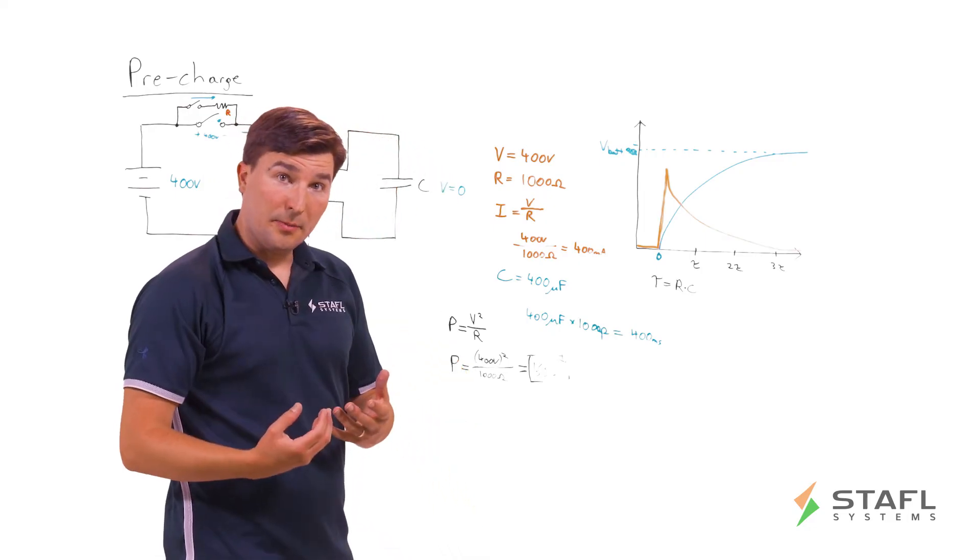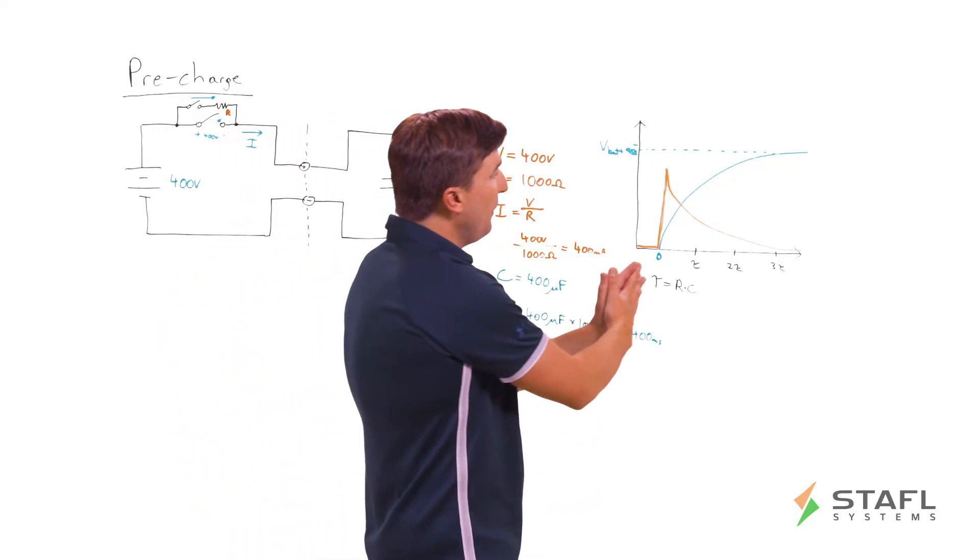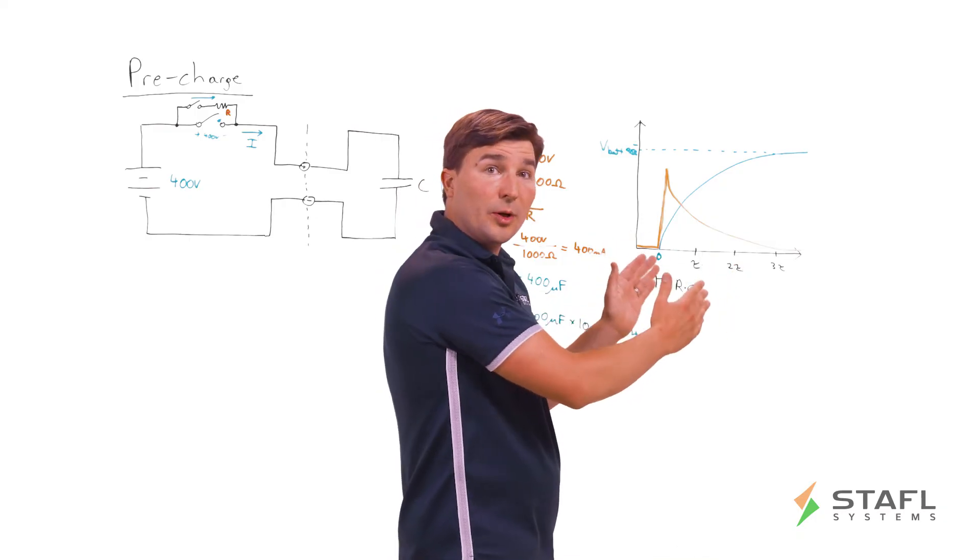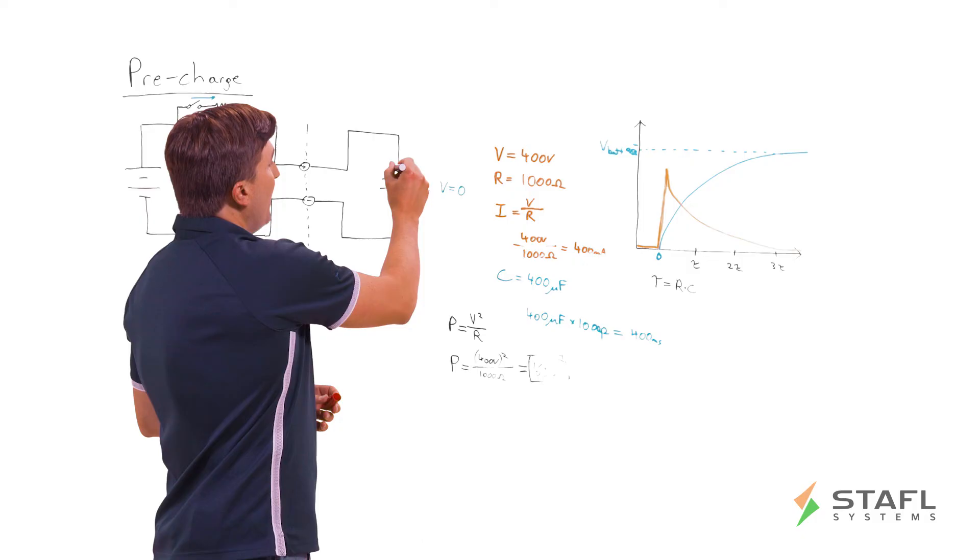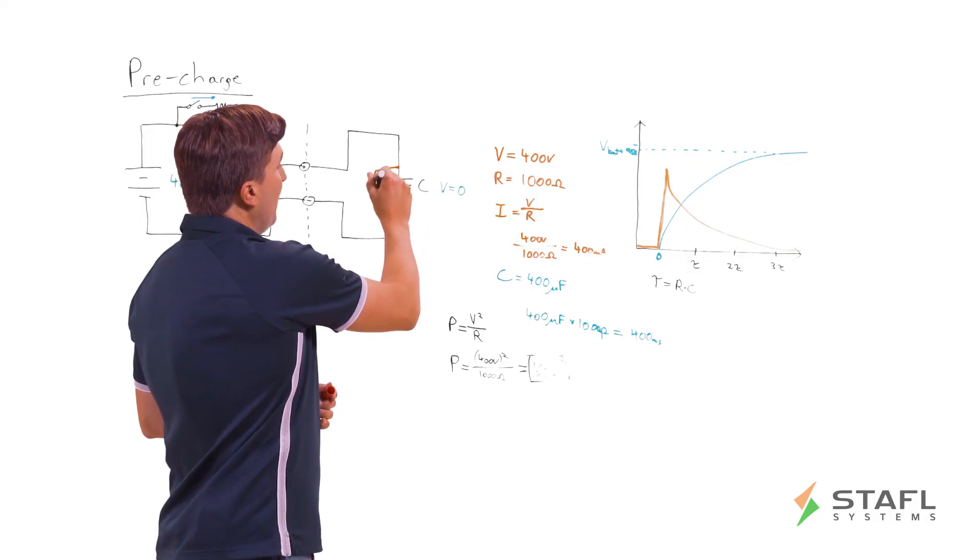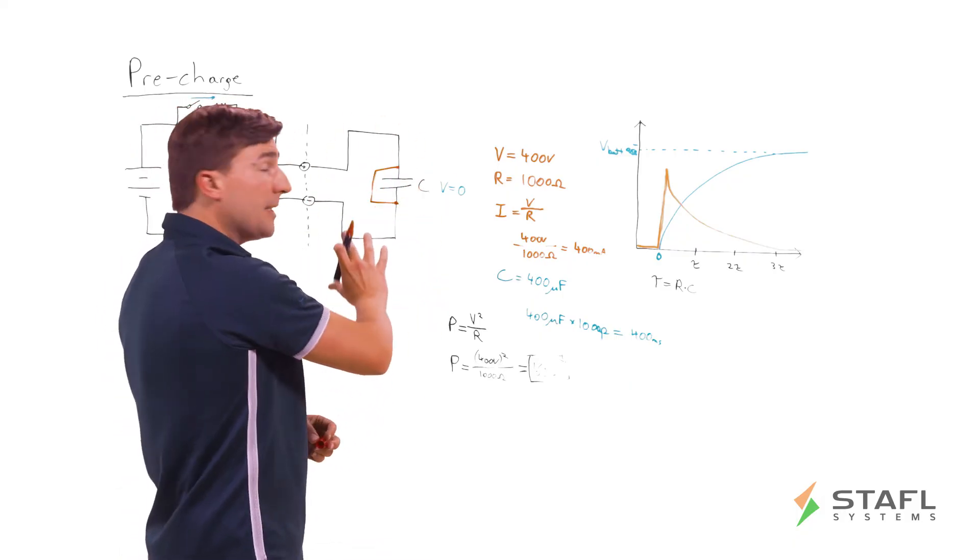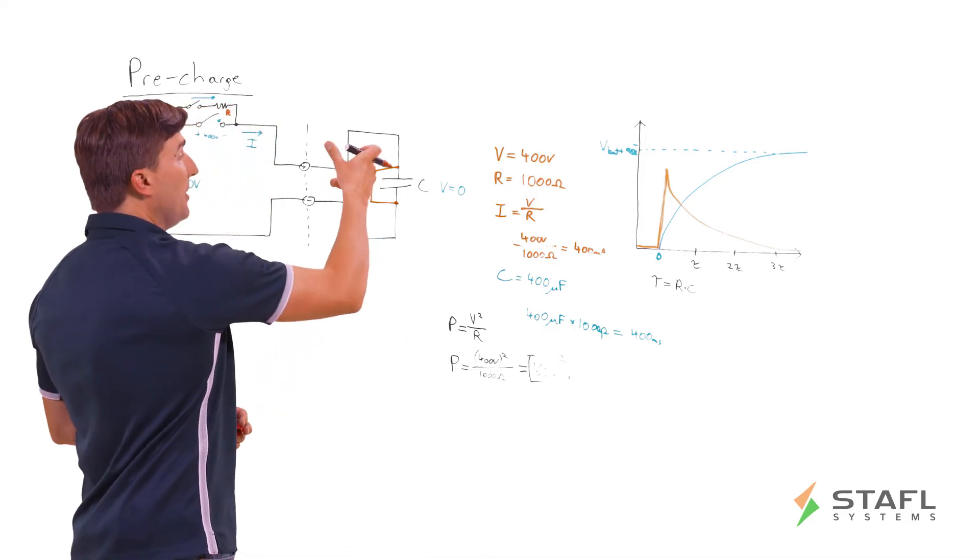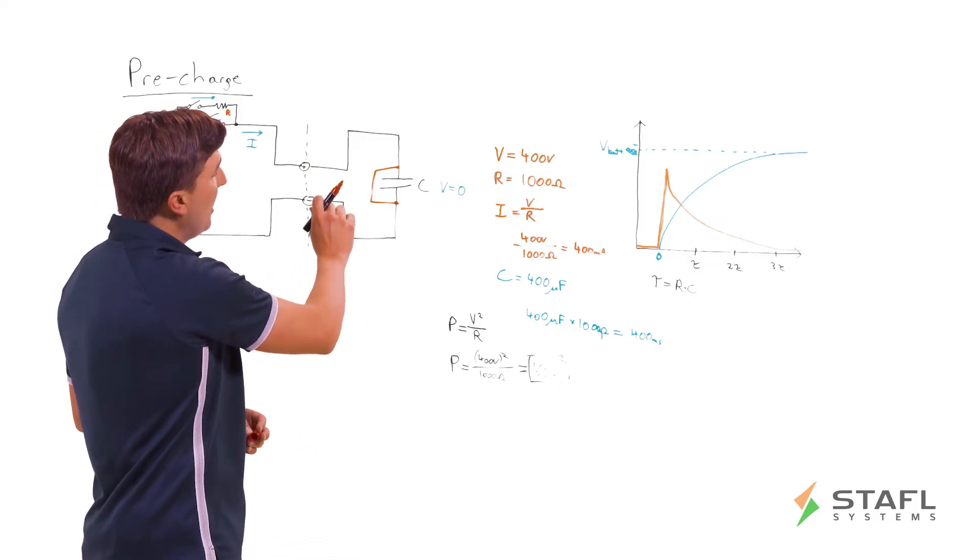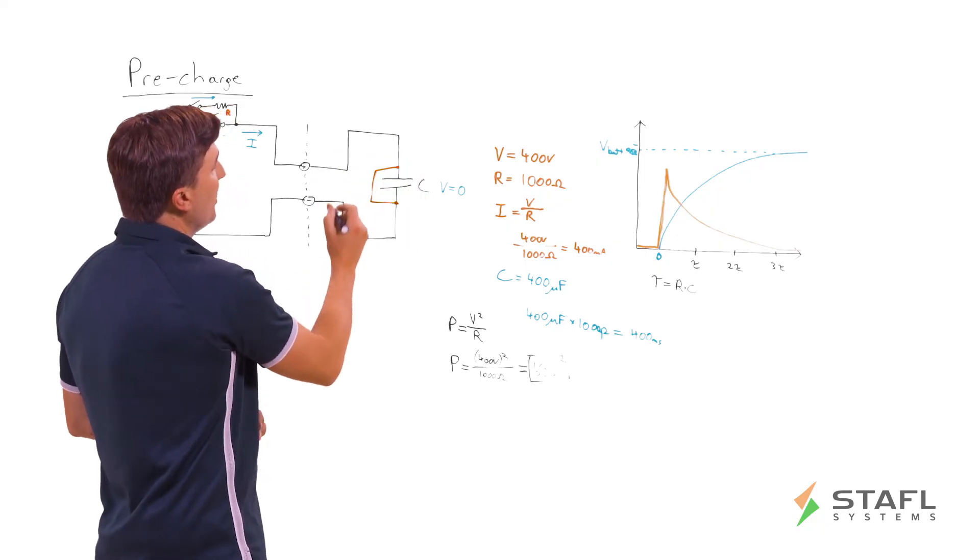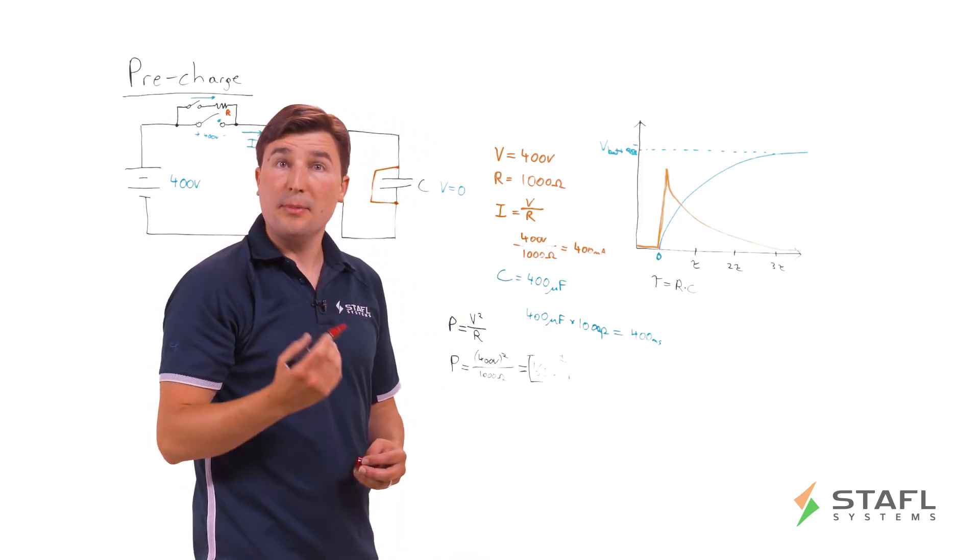So a couple other things to think about with pre-charge design. You want to enable some checking in a fault system of your BMS or battery management system to ensure that everything's working as expected. So one case to consider is the case where there is now actually a short circuit across this capacitor or some sort of other fault with this external system. This actually can be a real occurrence if the polarity of the system is flipped. So for example, if someone accidentally connects the negative terminal to the positive terminal and vice versa, then you can essentially have a short circuit from positive to negative.